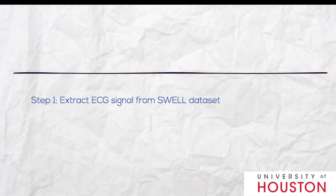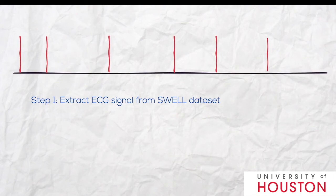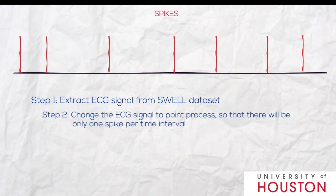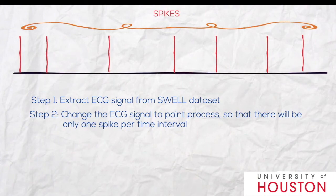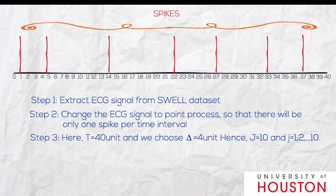We extract the ECG signal from the Sovel dataset and convert it to a point process so there is a maximum of one spike per time interval. In this example, we choose time equal to 40 units and delta equal to 4 units, dividing the whole time into 10 time intervals.